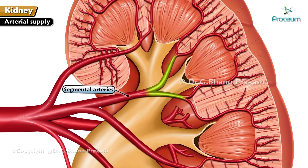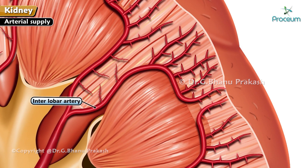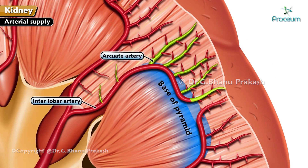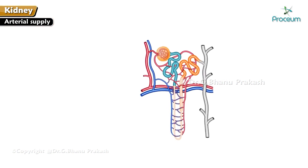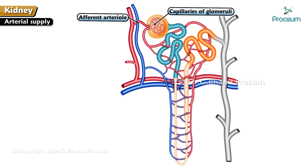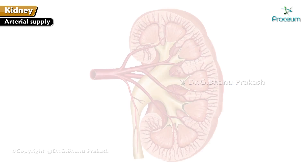Each segmental artery divides into lobar branches after supplying the renal sinus. Lobar arteries further divide into two or three interlobar arteries which pass between the pyramids. Each interlobar artery divides dichotomously into arcuate arteries as they reach the base of the associated pyramid, running parallel to the surface of the kidney between pyramids and overlying cortex. Each arcuate artery gives many interlobular arteries which pass radially toward the surface of the kidney. Interlobular arteries give afferent arterioles which pass to the capillaries of the glomeruli and then reunite to form the efferent arteriole. Efferent arterioles divide to form a peritubular capillary plexus around the convoluted tubules.